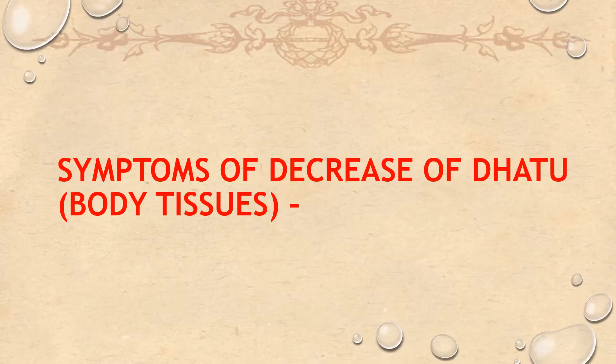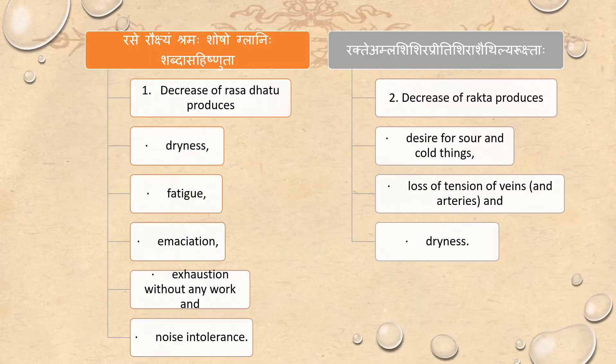Symptoms of decrease of Dhatu — body tissues. Decrease of Rasa Dhatu produces dryness, fatigue, emaciation, exhaustion without any work, and noise intolerance.